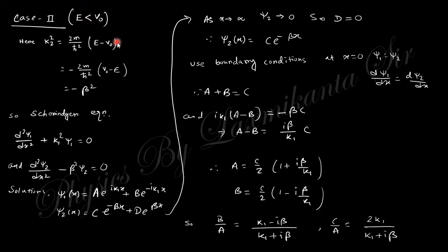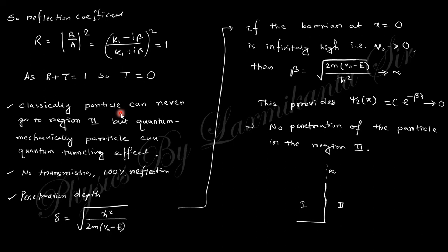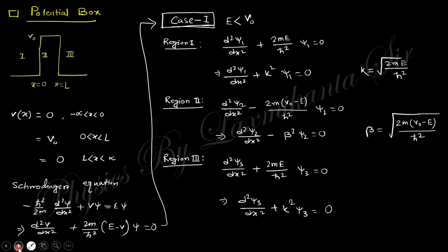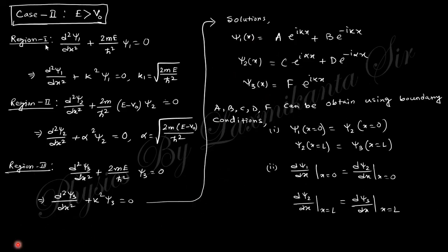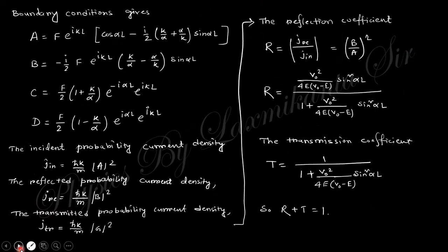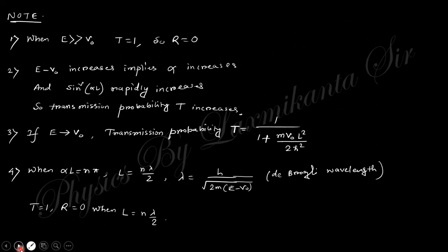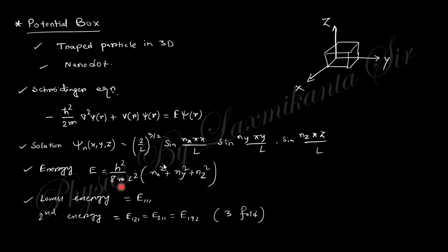For case two where E < V₀, k₂² is negative, giving an evanescent solution — you can go through these notes to understand the details. For the potential barrier (potential box), case one with E < V₀ gives equations in three regions; using boundary conditions you obtain the constants, current densities, transmission and reflection coefficients. For case two with E > V₀, similar expressions are obtained, and finally R + T = 1. A potential box confines a particle in all three dimensions.